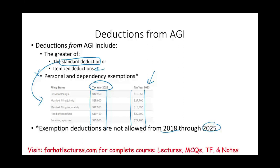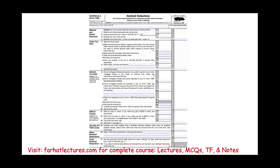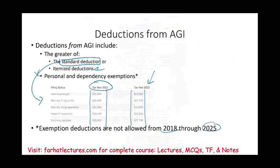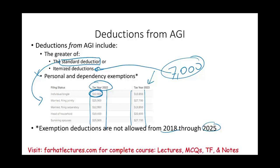What are the itemized deductions? We'll have a whole chapter on itemized deductions, but on Schedule A you add up medical and dental expenses, taxes paid, interest paid, gifts to charities, casualty and theft losses, and other itemized deductions. If you're single and all your itemized deductions total $7,000, you'd take the standard deduction of $12,950 instead, since it's higher.